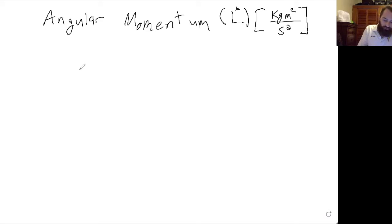So just like we had momentum, linear momentum was p equals mv.